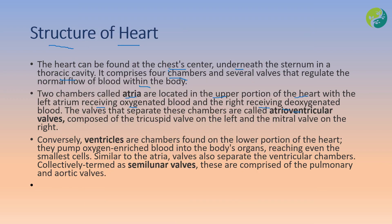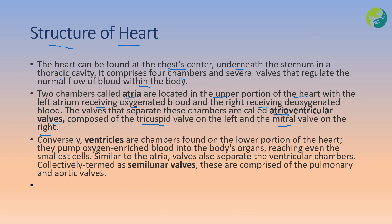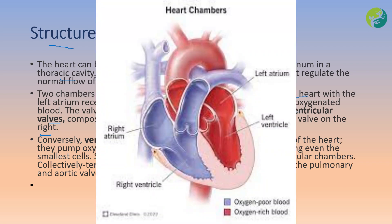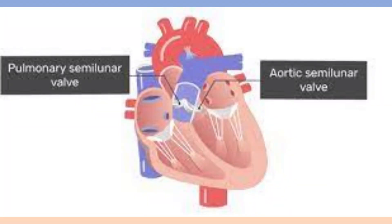The valves that separate these chambers are called atrioventricular valves, composed of the tricuspid valve and the mitral valve. Ventricles are chambers found in the lower portion of the heart; they pump oxygen-rich blood into the body organs, reaching even the smallest cells. The walls separating the ventricular chambers are collectively termed semilunar valves, comprised of the pulmonary and aortic valves.